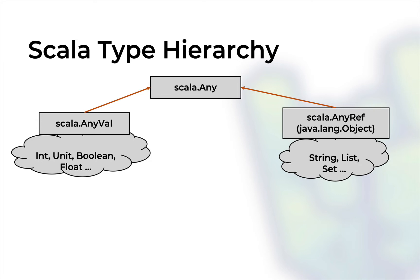I've seen some confusion about the nothing type in Scala and I wanted to shed some light on it. If you're a Scala programmer you might have seen the nothing type once or twice and you have at least the broad picture of Scala's type hierarchy. The root type in Scala is Scala.Any, which has two major hierarchies underneath it: Scala.AnyVal, which has all the value types including Int, Boolean, Float and so on, and Scala.AnyRef, which is equivalent to Java's Object. This is the parent of all the reference types including Strings, Lists, Sets, and every single type that we define ourselves.